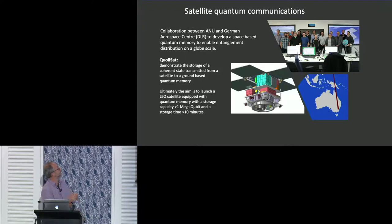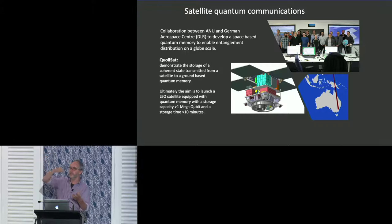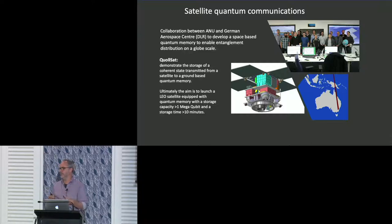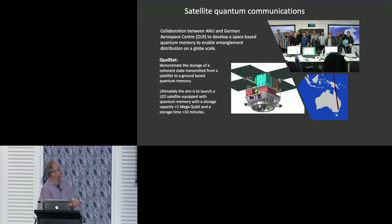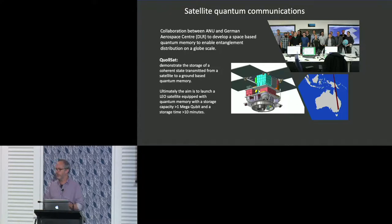In the first instance, we're looking at a more modest objective: demonstrating that we can take quantum information and beam it down from the satellite and store it in the memory on the base station, not worrying so much about storage times or data storage capacity. First we'd show we can take a classical light beam, put it through the atmosphere, and couple it into a memory with sufficient fidelity. This is tagged onto the Qolsat mission we've been planning with DLR — the main component is a 20 centimetre telescope and gyros to point it.